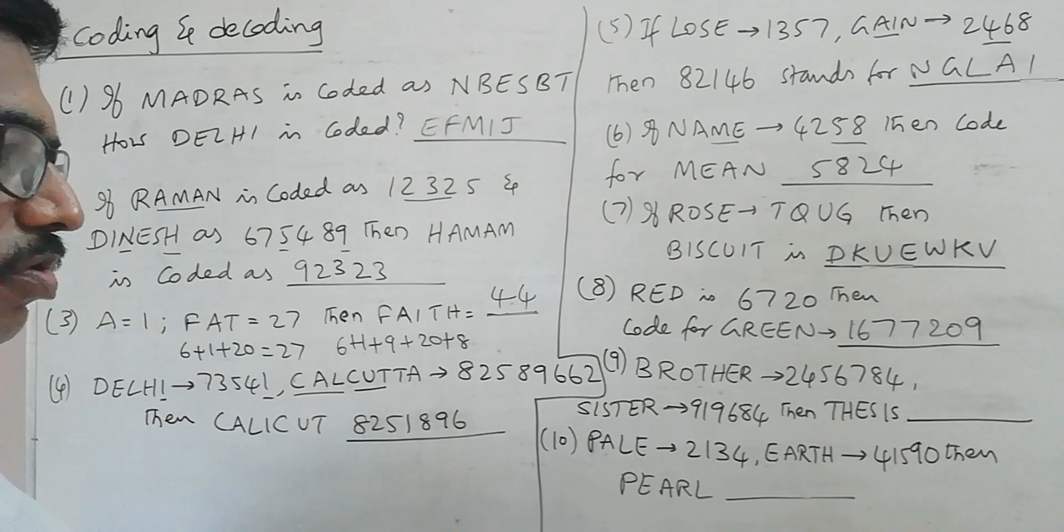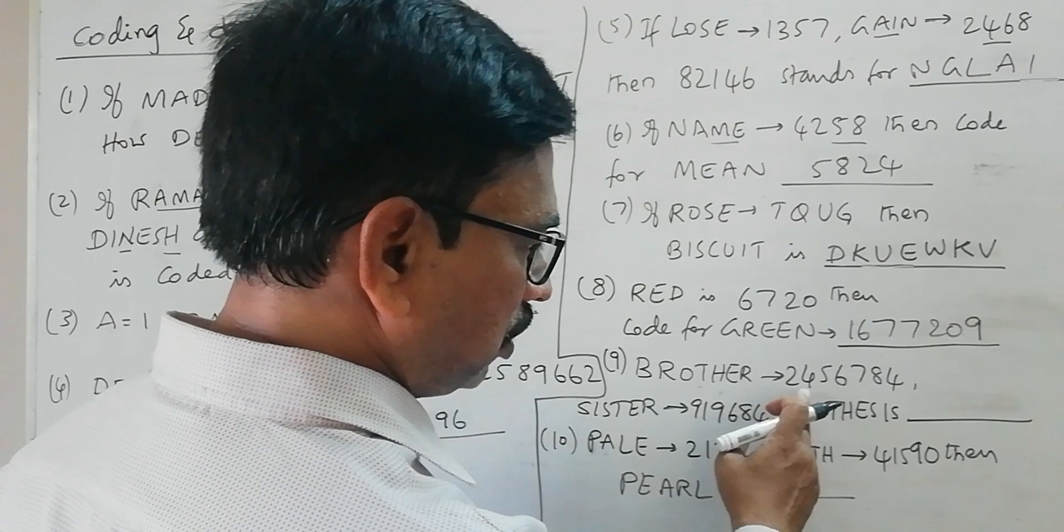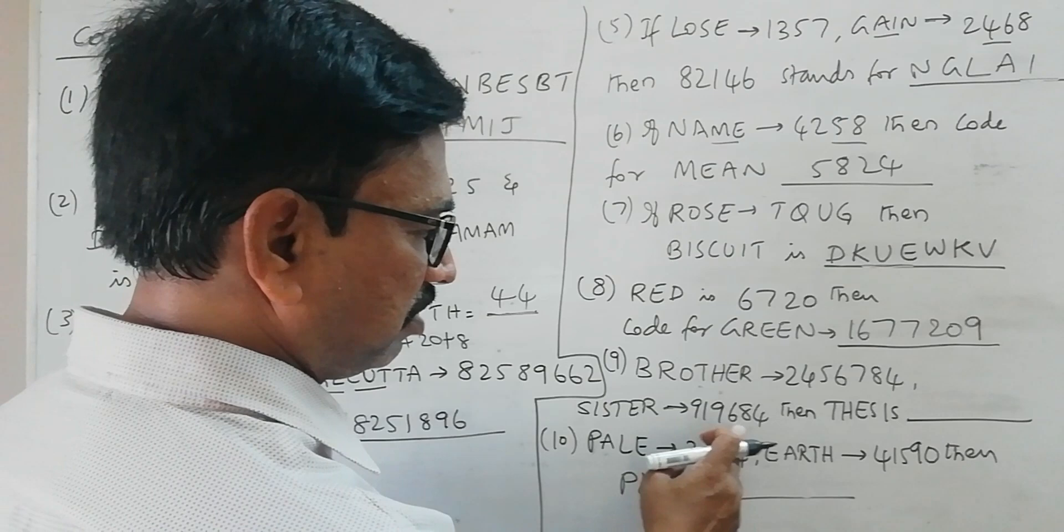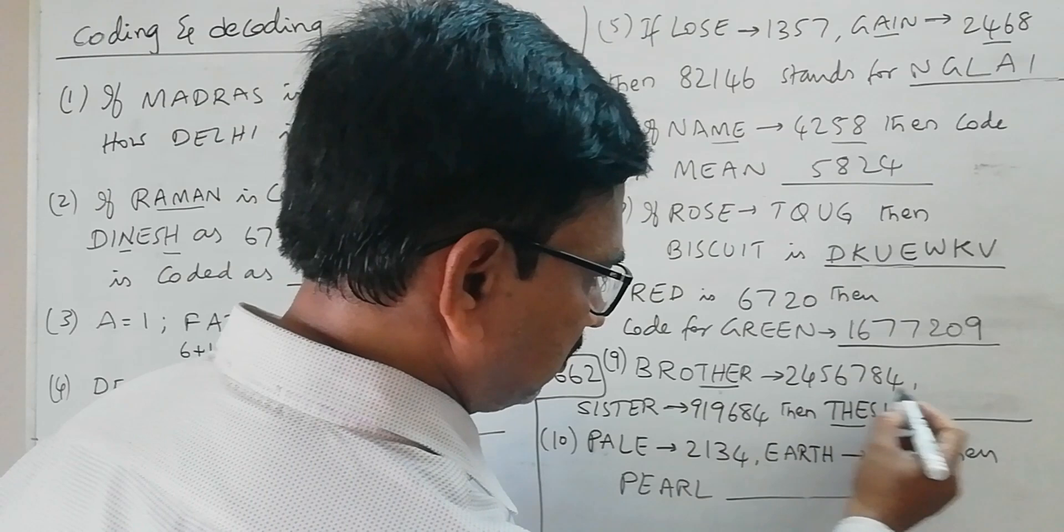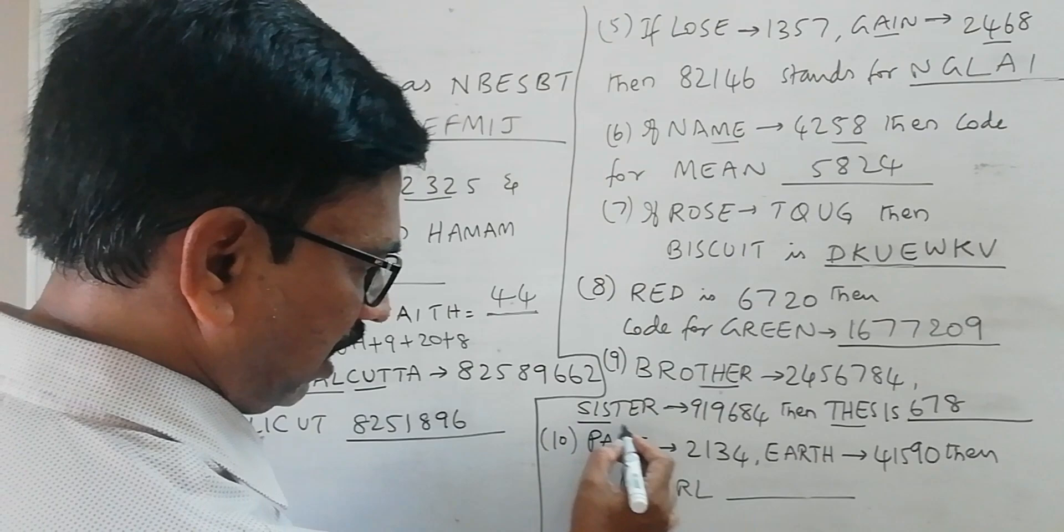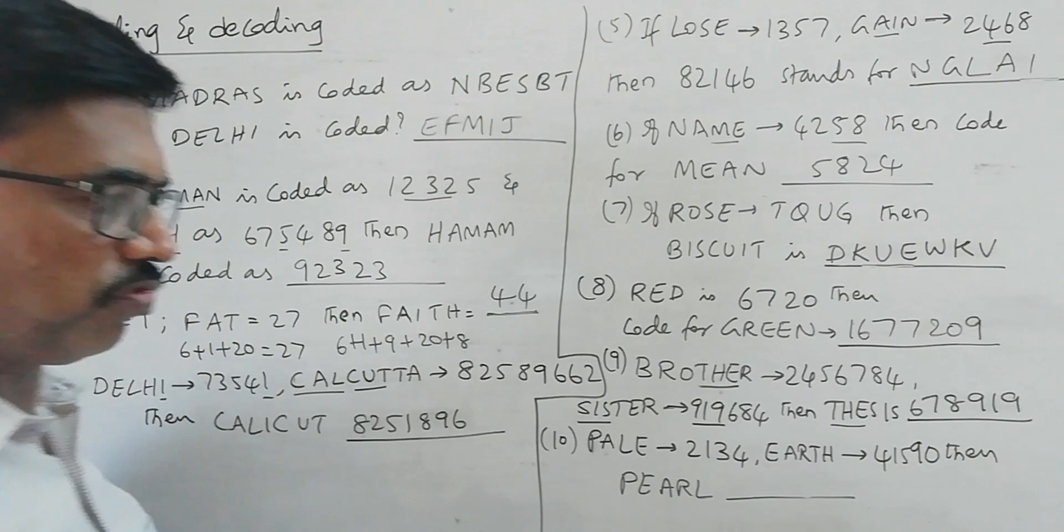Next, BROTHER is coded as 2456784, and SISTER is coded as 919684. Then what is the code for THESIS? In THESIS we have T-H-E here. In BROTHER we have T-H-E, which is coded as 678. Then in SISTER we have S-I-S, which is coded as 919. So 678919 is the code for THESIS.